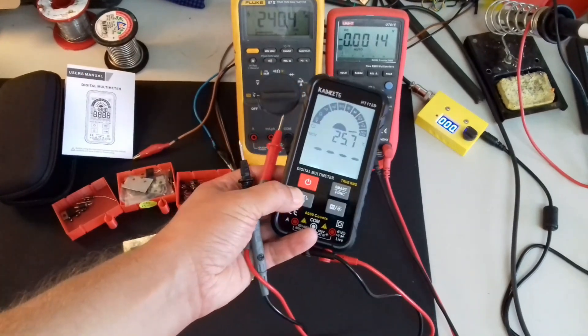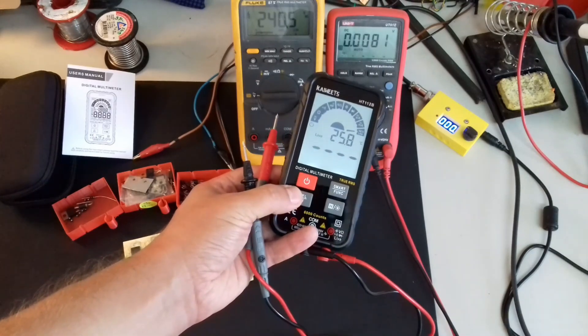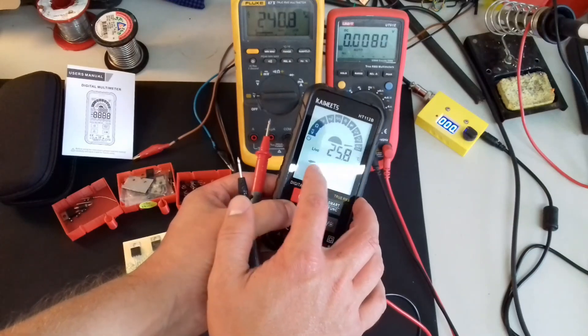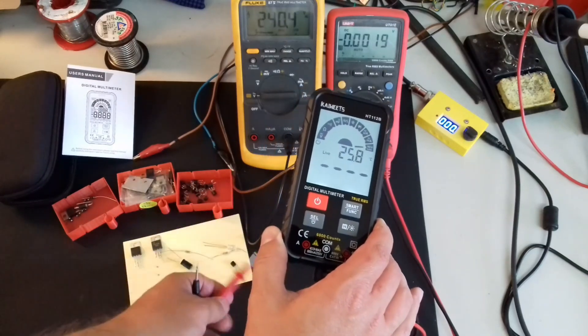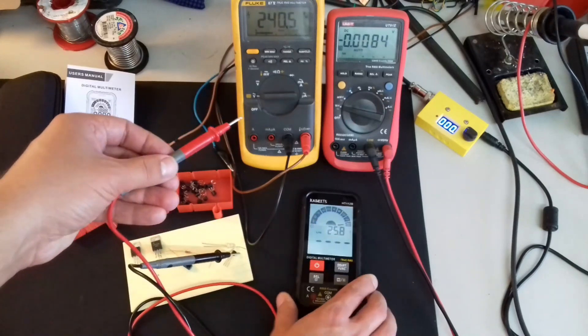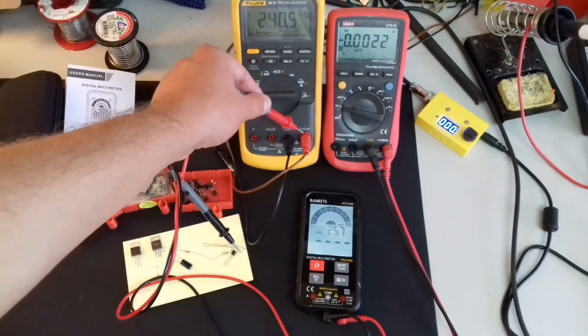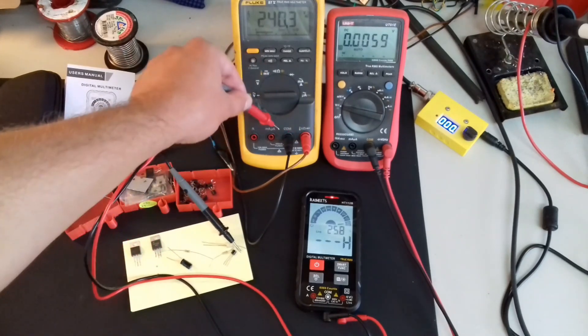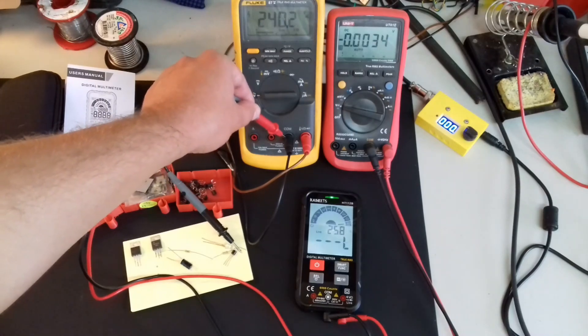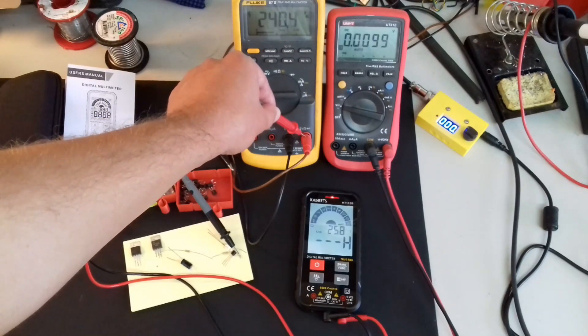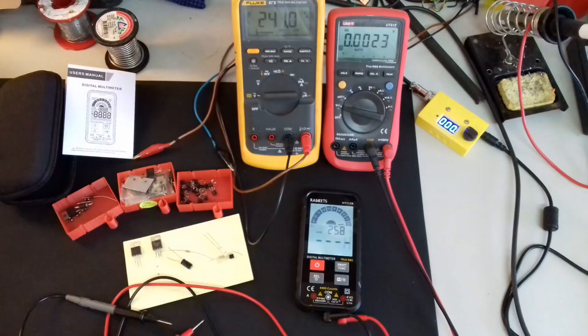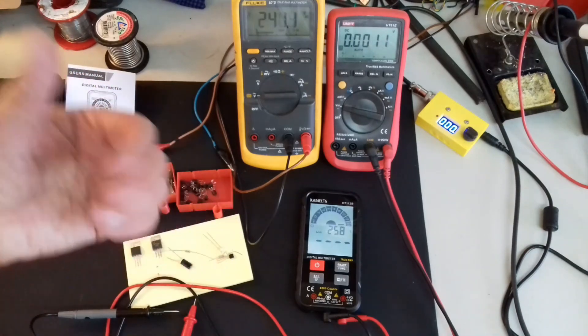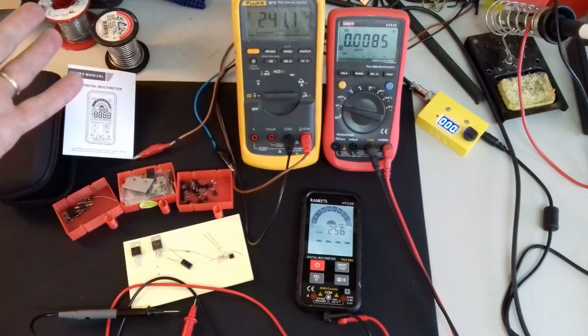And it also gives you the possibility of pressing select here and switching from NCV to live. And this means that you can actually take the positive lead of the multimeter, and you can actually detect, like, which one is the active wire and which one is the neutral wire. And I find this really helpful for electricians. So, again, middle class multimeter, really good, I really like it.